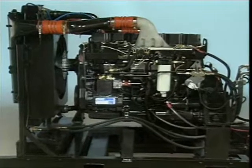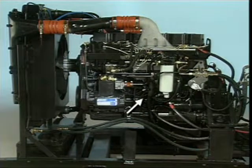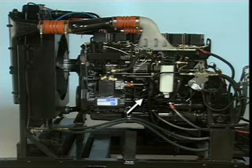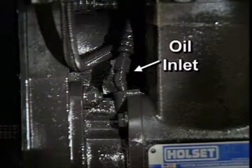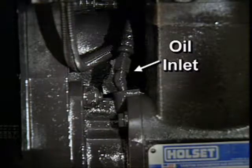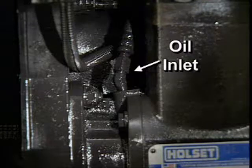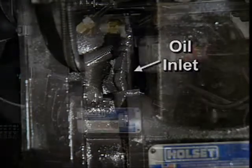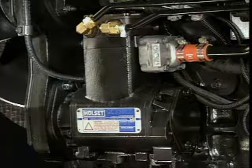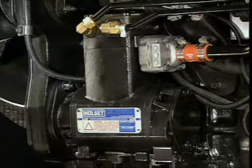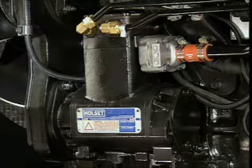Oil flow to the air compressor begins at a fitting installed in the main oil rifle. The line connected to this fitting supplies oil to the air compressor crankcase, where it lubricates the crankshaft and connecting rod. From the crankcase, the oil drains through the front gear housing and returns to the oil pan.